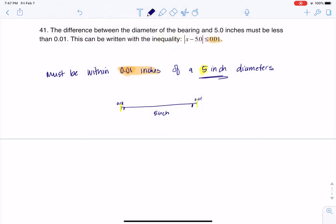So we're saying X is the diameter of the bearing. So the diameter of my bearing, if I subtract 5 from it, it's got to be less than 0.01 inches away from 5. So this is where we're centered, and this is our distance from that center.